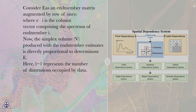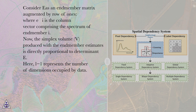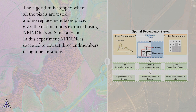Consider E as an N-member matrix augmented by a row of 1s, where E_i is the column vector comprising the spectrum of N-member i. The simplex volume V produced with the N-member estimates is directly proportional to the determinant of E, where L-1 represents the number of dimensions occupied by the data. The algorithm is stopped when all the pixels are tested and no replacement takes place.